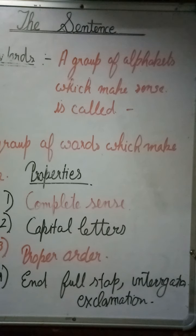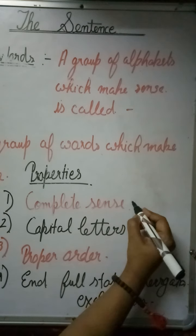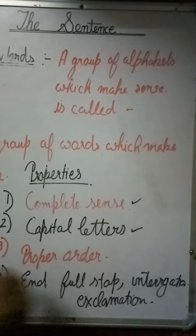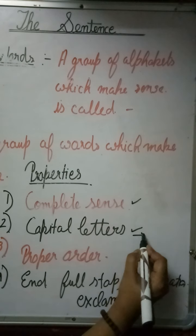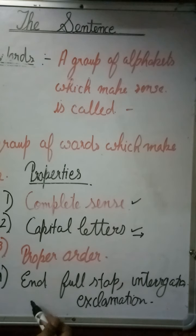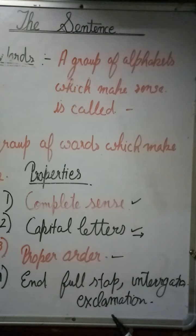So first of all, the properties of the sentence. The first property of a sentence is that it should have complete sense. The words should be in a proper order. This is very important, and then we will solve the questions in our grammar.